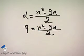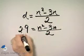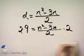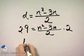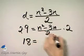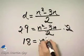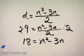Let's go ahead and multiply both sides by two so that we no longer have fractions. The left side by two and the right side by two. Nine times two is 18, and that is equal to N squared minus 3N.